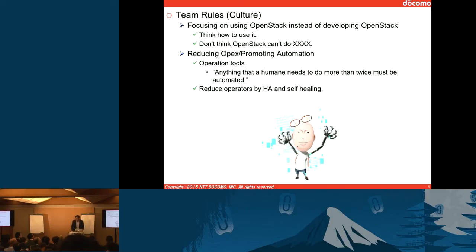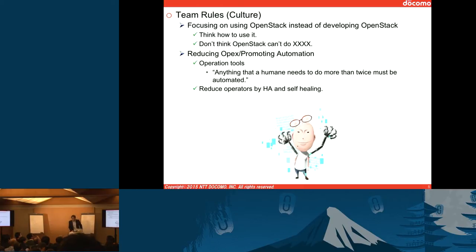Our team members are highly skilled people, but we still have a few rules — we call it culture — which is important to achieve higher output by the team. The first rule is that we are just focusing on using OpenStack instead of developing OpenStack, because our team members' numbers are highly limited.